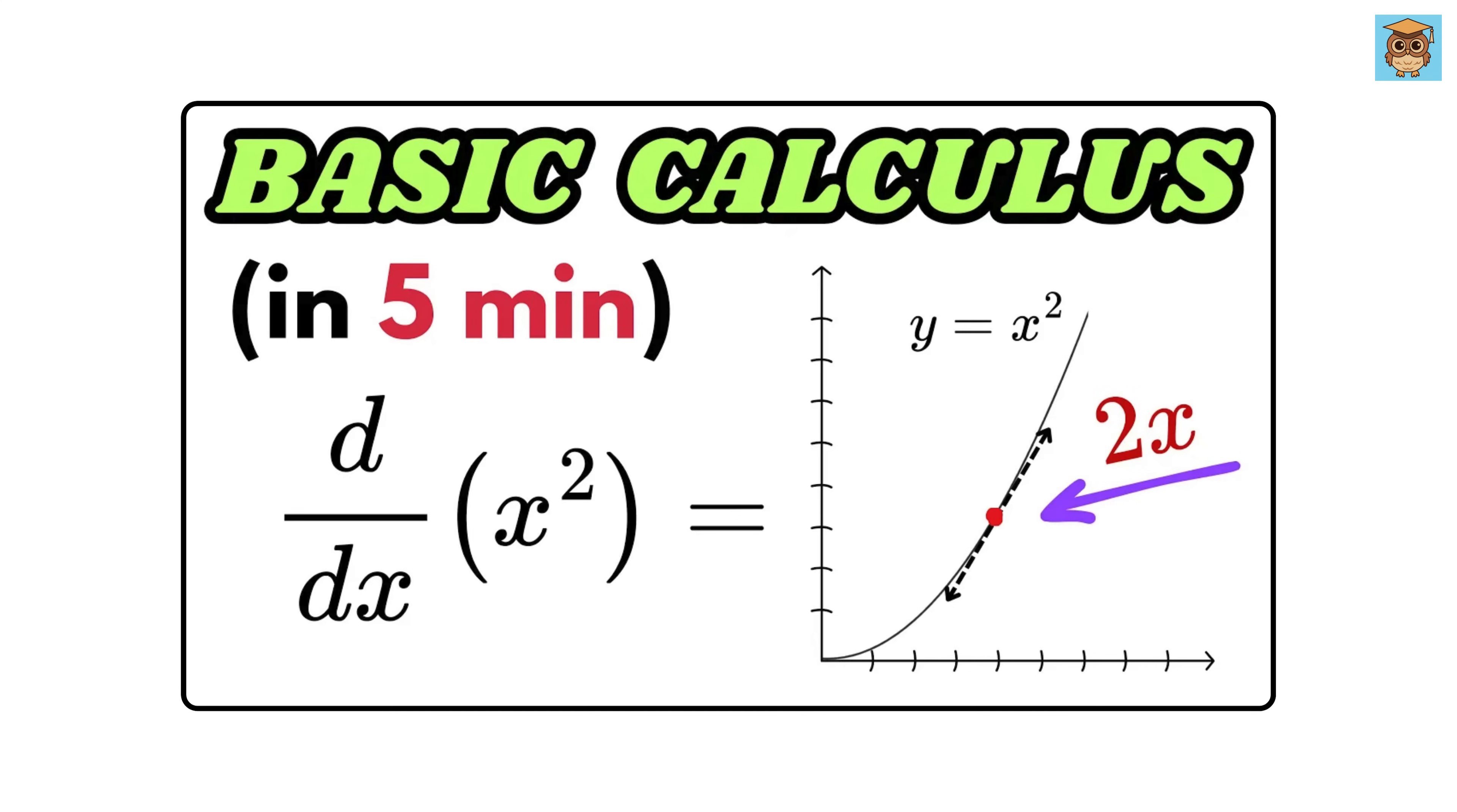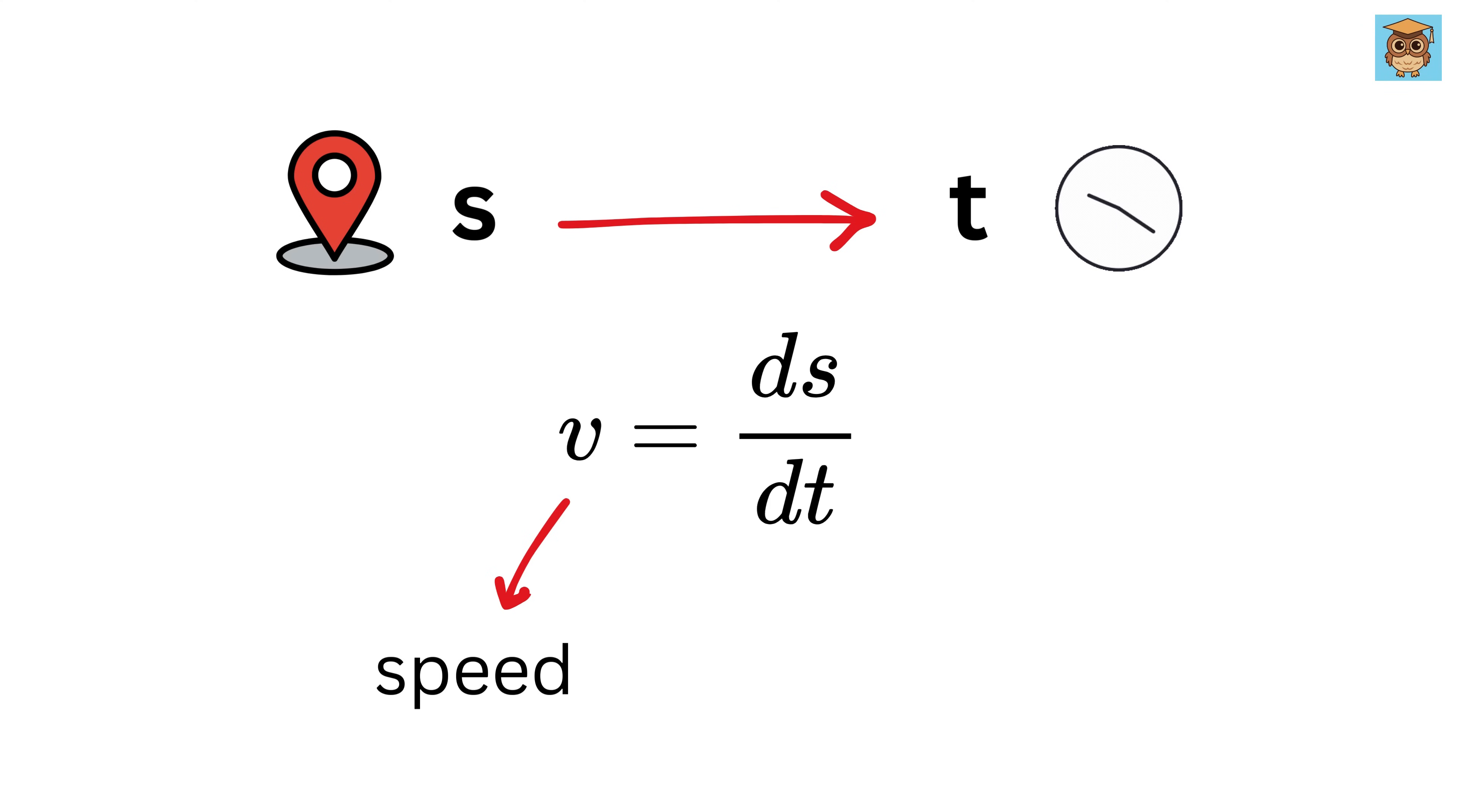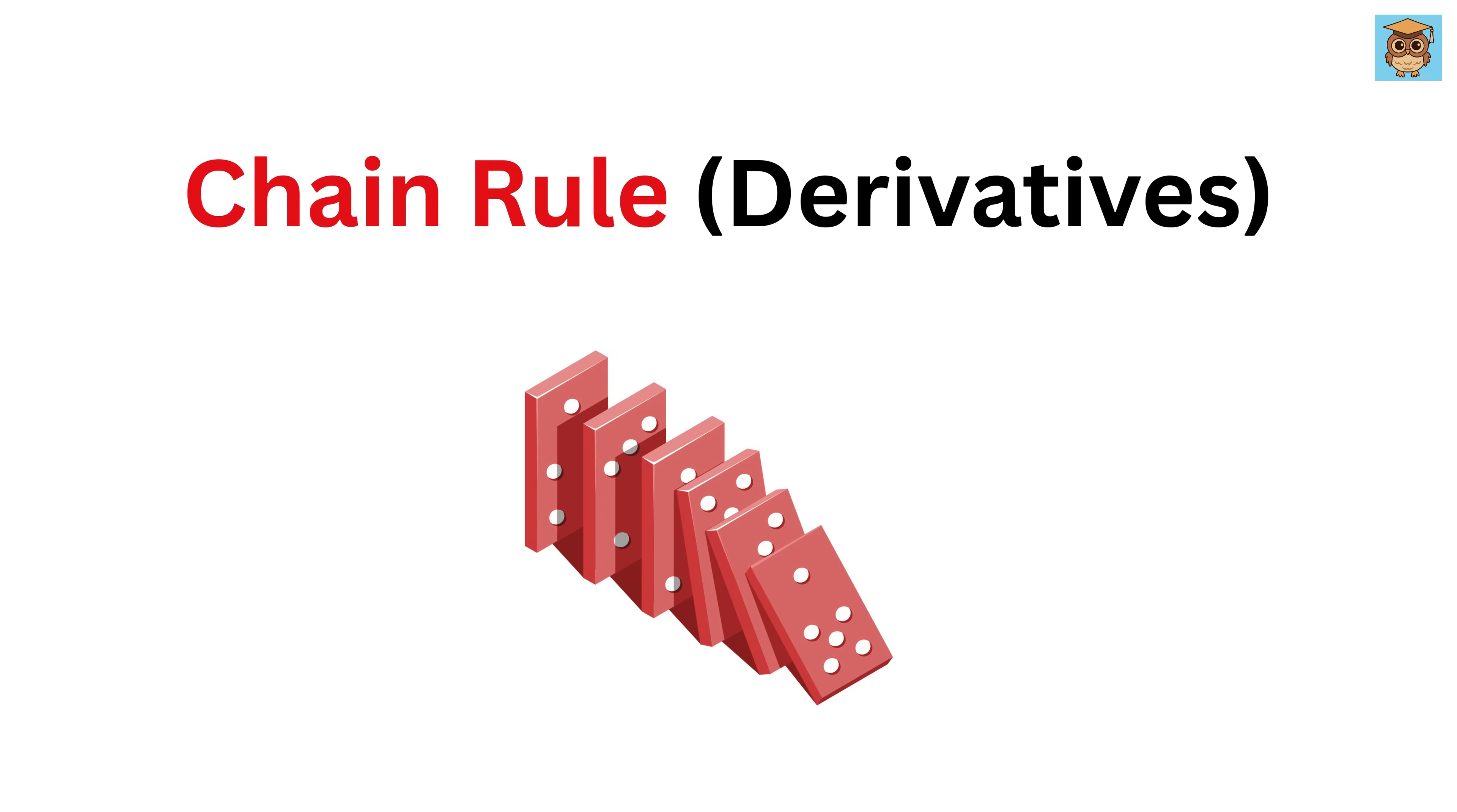Till now, in my previous video, we've seen simple differentiation, where one variable depends directly on another, like how distance changes with time, whose derivative gives us speed. But in many real-life situations, things aren't that direct. One variable might depend on another, which then depends on something else. This is where the chain rule comes into the picture. It tells us how to figure out the effect of one variable on another, even if they're not directly connected.